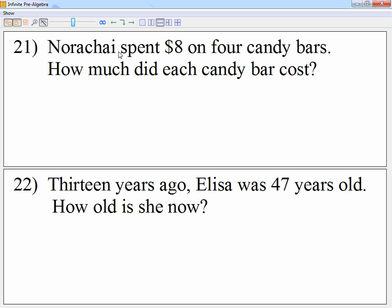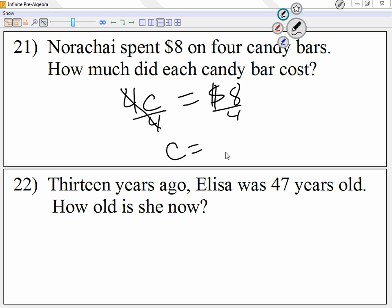Norachai spent $8 on four candy bars. So she had four candy bars, and this thing was $8. How much did each candy bar cost? I'm just going to divide each by four, right? Because this is times, so the opposite of times is divide. Eight divided by four is two.